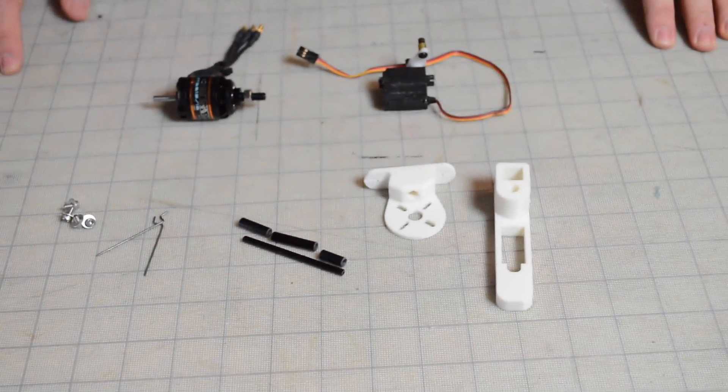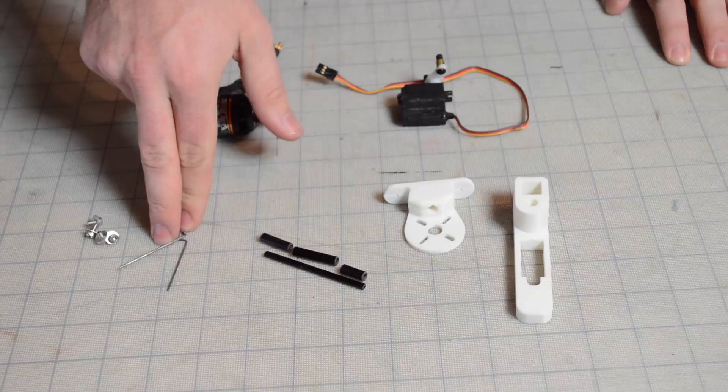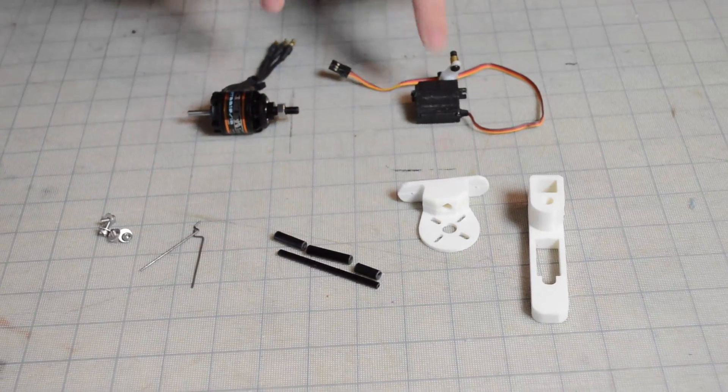And what you're going to need to assemble it is your carbon and then the linkages, your bolts, and then the servo and the motor.